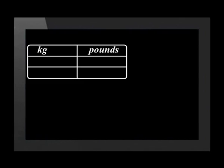We've used this before. We fill in the units in the question, namely kilograms and pounds. Next, we fill in what we have to convert under the correct heading. In this case, we write 3 kilograms under the heading kilograms. Lastly, we fill in the conversion factor, keeping the same units in the same column. In this case, we write 0,45 in the kilogram column and 1 in the pound column.